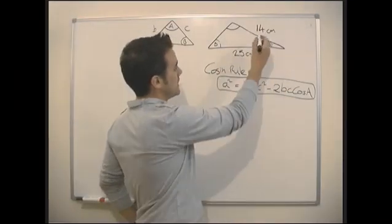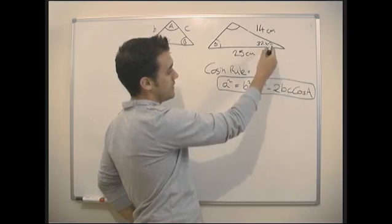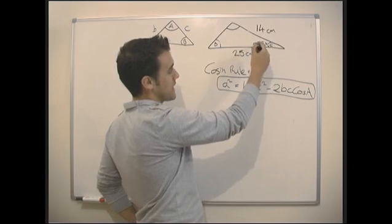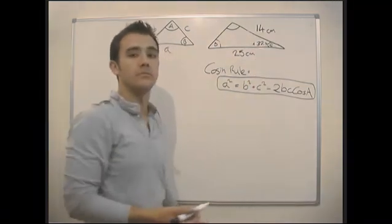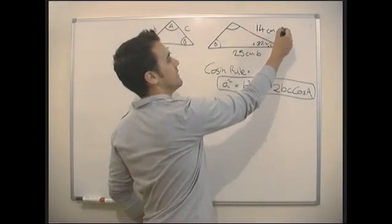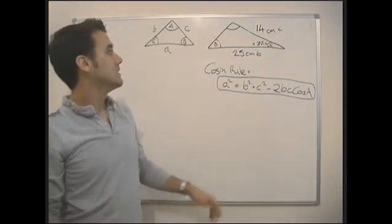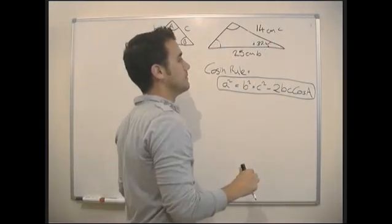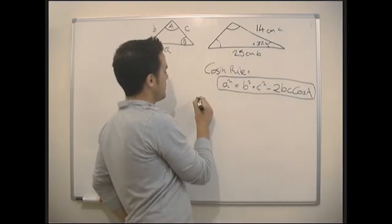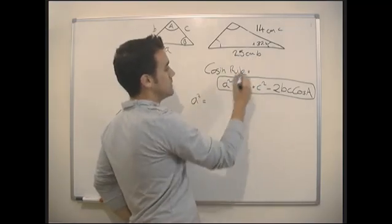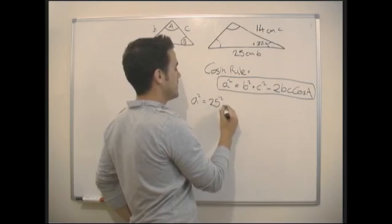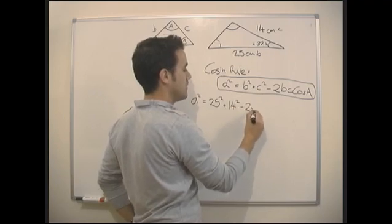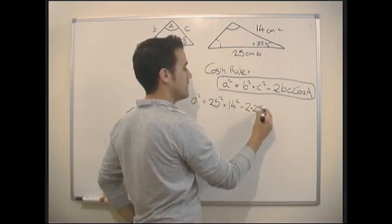Let's use it on this example. This is obviously our angle A — it doesn't matter what we call b and c, so we'll just label them b and c for the purposes of this. It doesn't matter at all. So we find that a squared must equal b squared — that's 25 squared — plus c squared — that's 14 squared — minus 2 times 25 times 14.